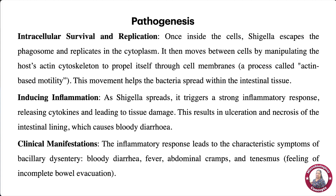Once inside the cell, Shigella escapes the phagosome — the subcellular organelle that destroys pathogens through phagocytosis — and replicates in the cytoplasm. It then moves between cells by manipulating the actin cytoskeleton, propelling itself through the cell membrane to spread within intestinal tissue.